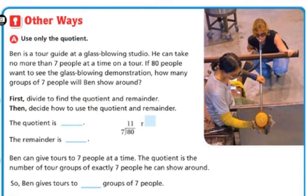Other ways. Well, you can use only the quotient. For example, Ben is a tour guide at a glass-blowing studio. He can take no more than seven people at a time on a tour. If 80 people want to see the glass-blowing demonstration, how many groups of seven people will Ben show around? So first, I'm going to divide to find the quotient and the remainder.